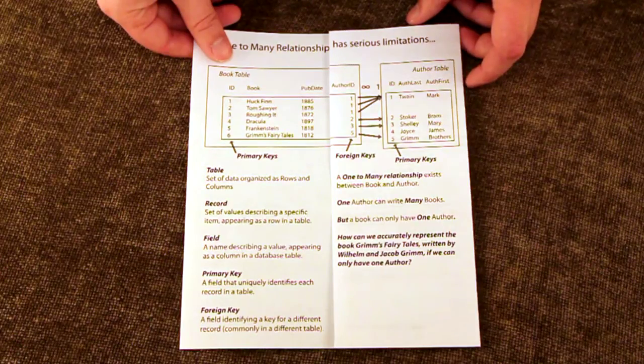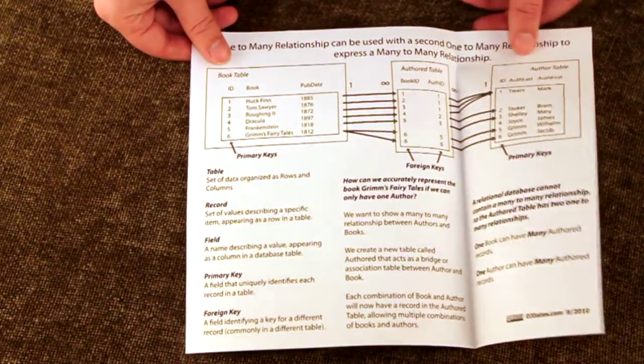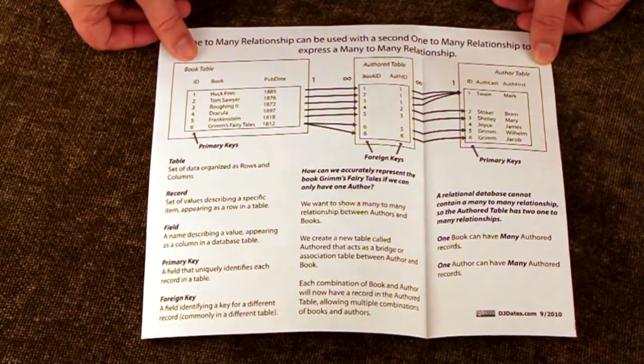When the pamphlet is opened, the addition of a third table and second relationship is revealed, showing the components of a many-to-many relationship.